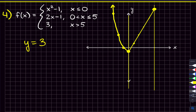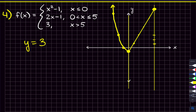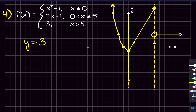The third piece is y equals three, used for x greater than five. Y equals three is up three on the y-axis. At x equals five, since it's strictly greater than — no 'or equal to' — we use an open circle there. From that open circle we draw the horizontal line y equals three going to the right. That completes our final piecewise function for this video.